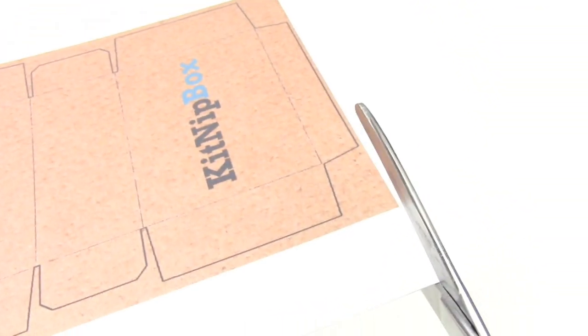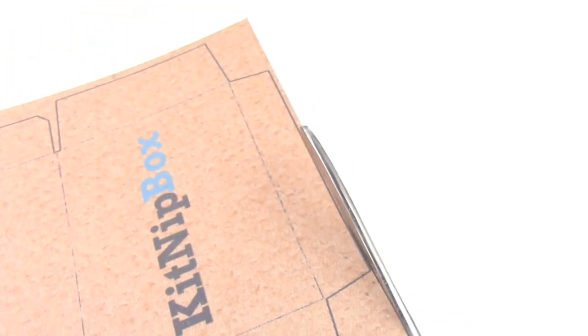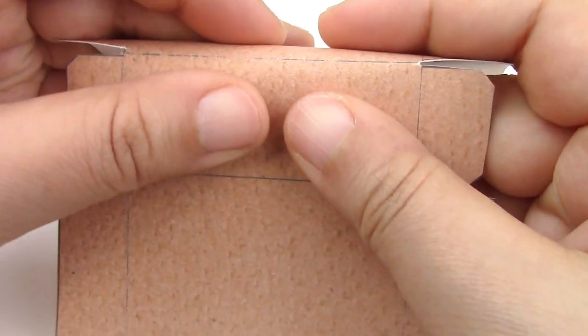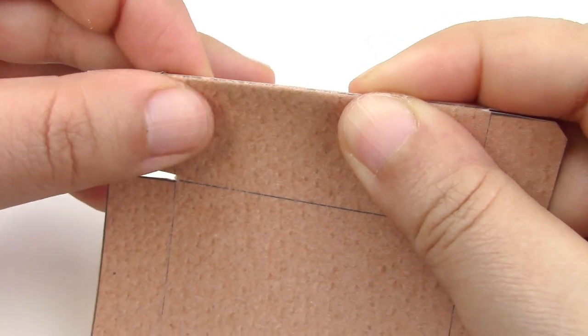All right, so the first thing we're going to do is cut the box out in the shape, and of course go into the little nooks and crannies. And you're going to fold where the black lines are.